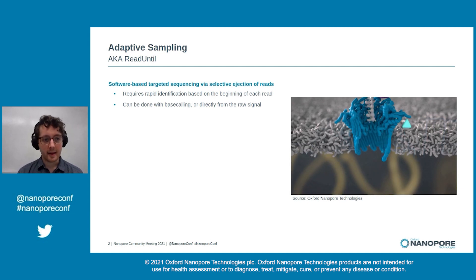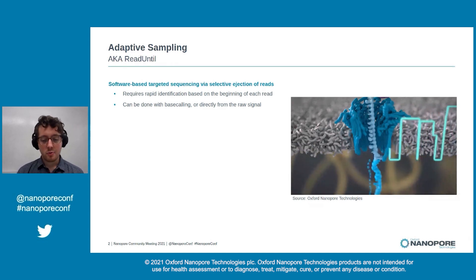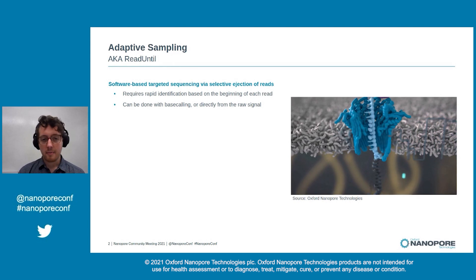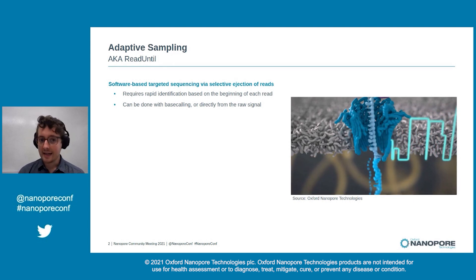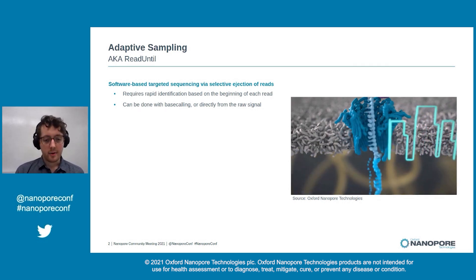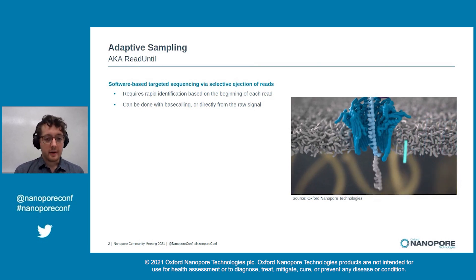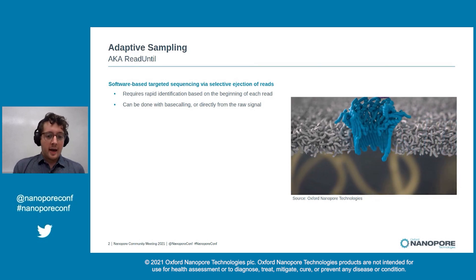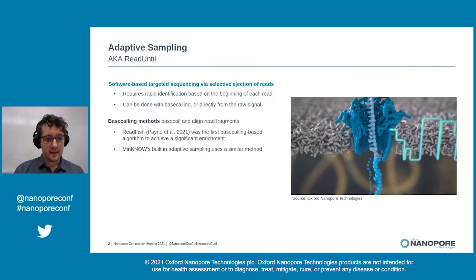Adaptive sampling, also known as read until, is a method where individual reads can be selectively ejected from the pore before they finish sequencing, enabling targeted sequencing without any special library preparation. To get this to work, this requires an algorithm which can rapidly identify reads of interest in real time, and there are two main approaches which people have used for this.